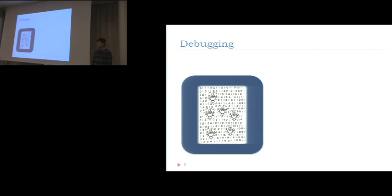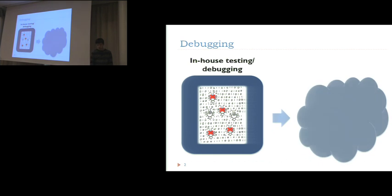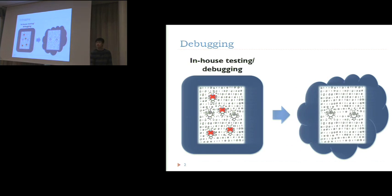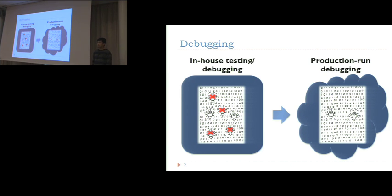Software bugs are prevalent. Given new software before deployment, developers will definitely test and run it, so several bugs are removed. We call this phase in-house testing and debugging. Then the software is deployed to users, and it could lead to crashes or wrong outputs due to remaining bugs. We call this phase production run debugging, or post-deployment debugging.